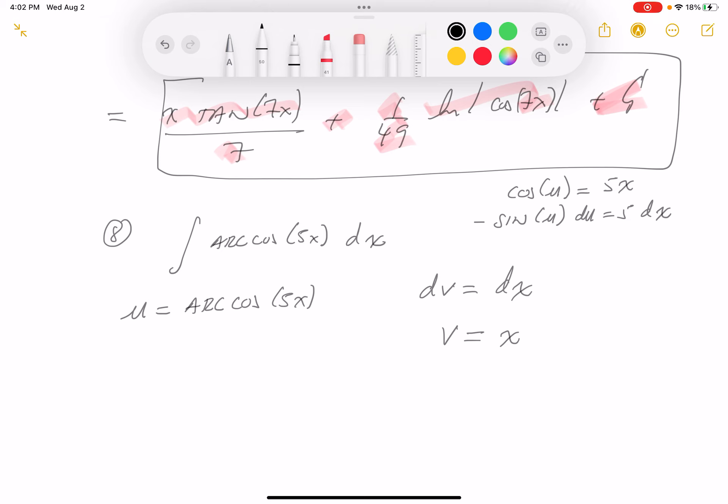So, that really doesn't help me too much, but I think I kind of remember that in the past what we did was we drew a triangle down. And the angle's u. And the ratio for cosine of u is 5x over 1. So, this would be 5x. That would be 1.